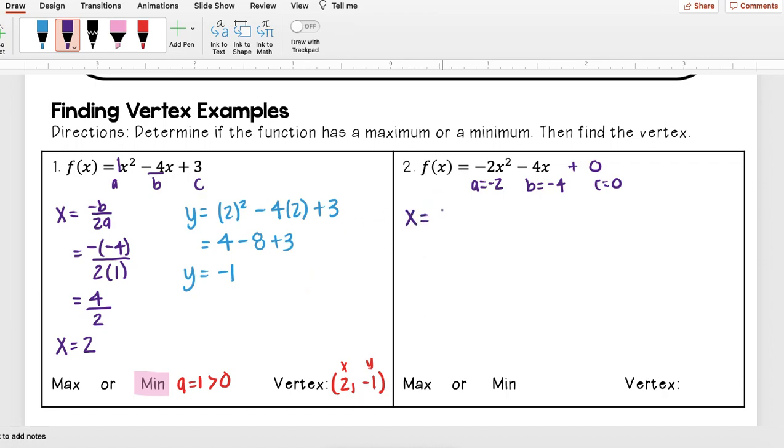First I need to find my axis of symmetry, which is -b/(2a). So when I take the opposite sign of b, my b value is -4, so the opposite sign of -4 is positive 4 over 2 times a, which is -2. 2 times -2, I get -4. So that means x = -1. So I have the first part of my vertex, it's -1.